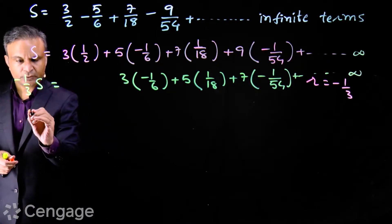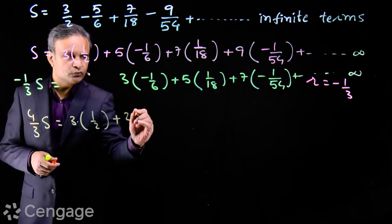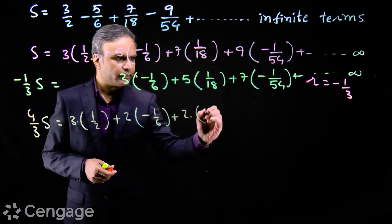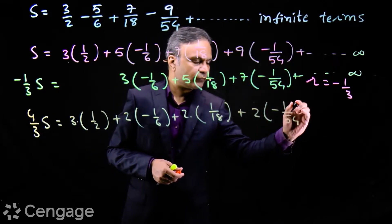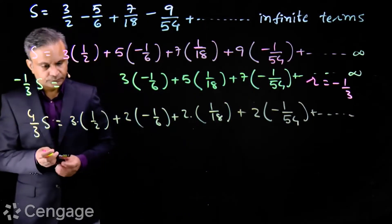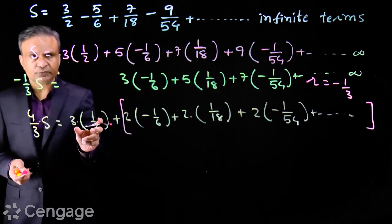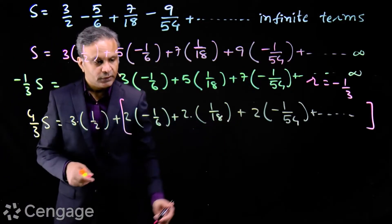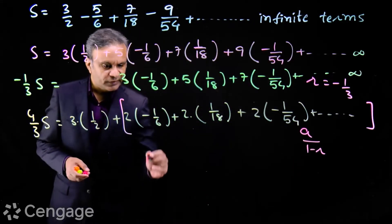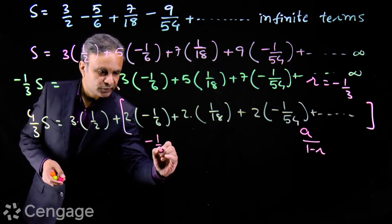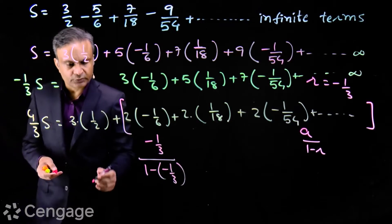Subtracting gives (4/3)S = 3(1/2) plus 2(-1/6) plus 2(1/18) plus 2(-1/54) and so on. This remaining part after the first term is an infinite GP. We exclude the first term and apply the sum of infinite GP formula a/(1 - r). The first term of this GP is -1/3 and the common ratio is -1/3, so the sum is (-1/3) divided by (1 - (-1/3)).